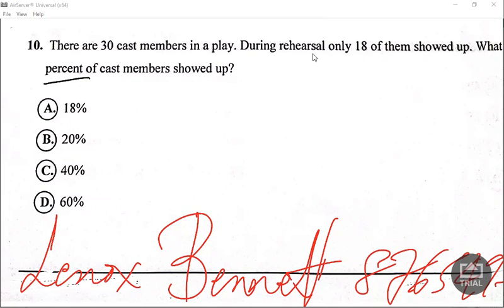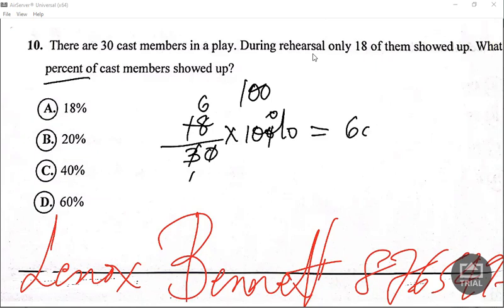Percent means out of 100. So that means we can see 18 turned out out of the total which was 30, and we times that by 100 percent since that's how we calculate the percent. Divide by 10, 3 into 3 is 1, 3 into 18 is 6, 6 times 10, we're at 60 percent, which makes sense because it's more than half.